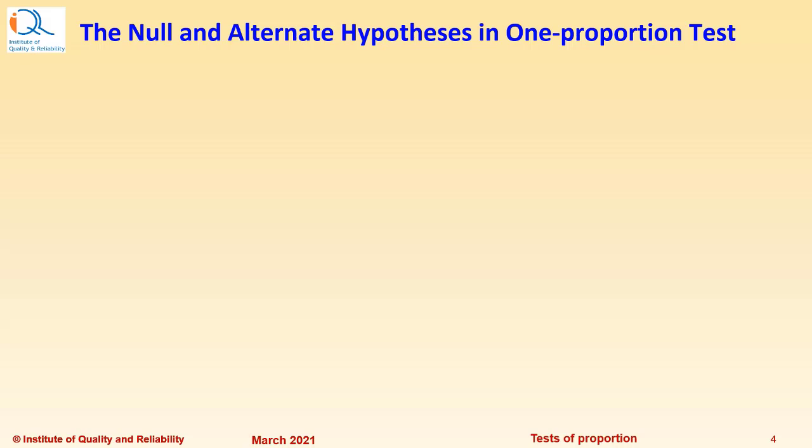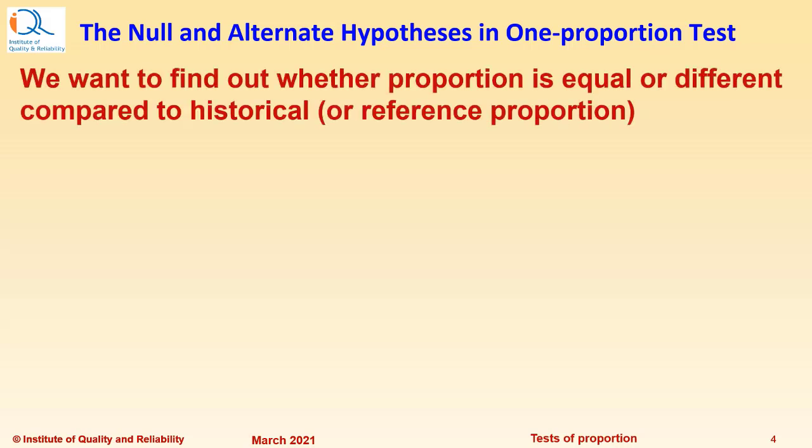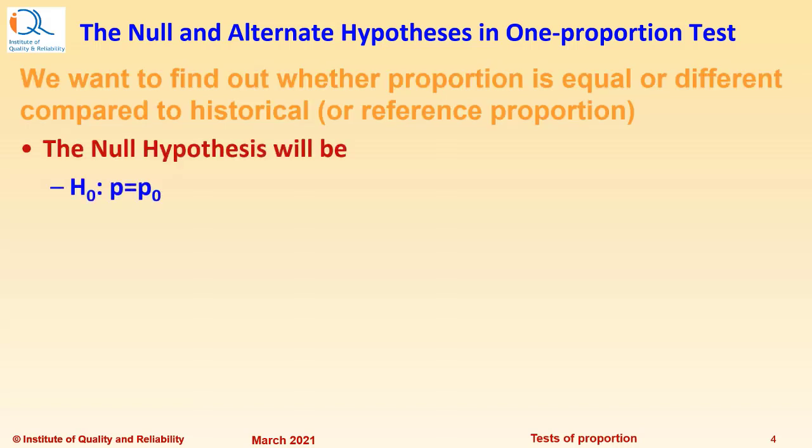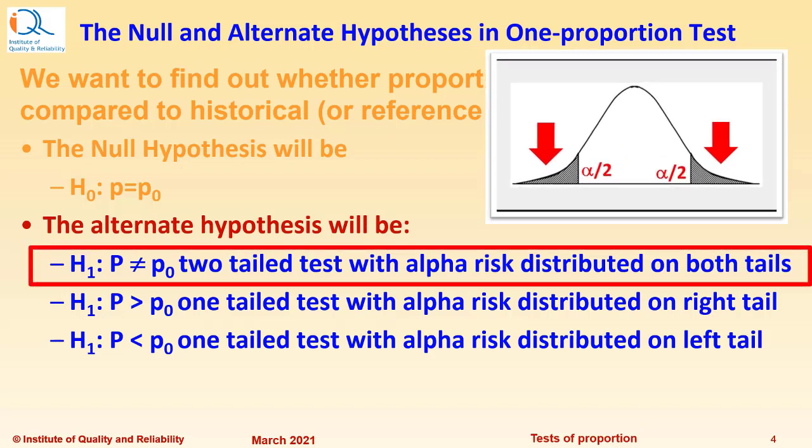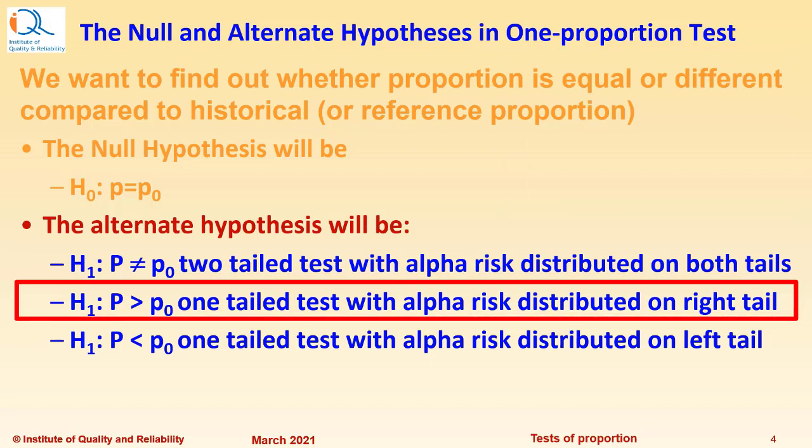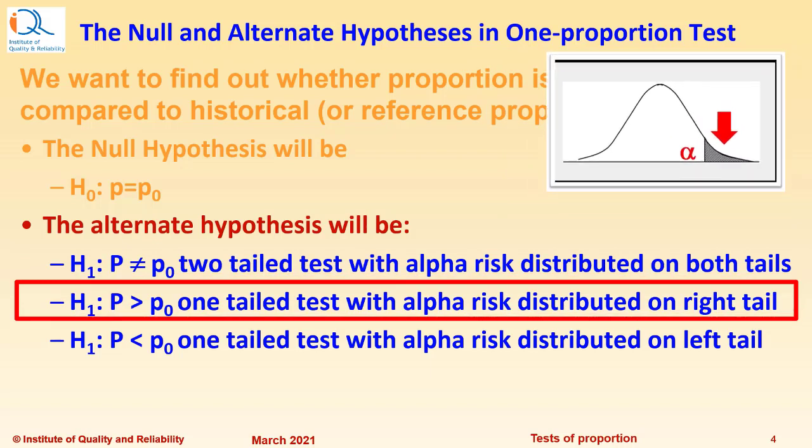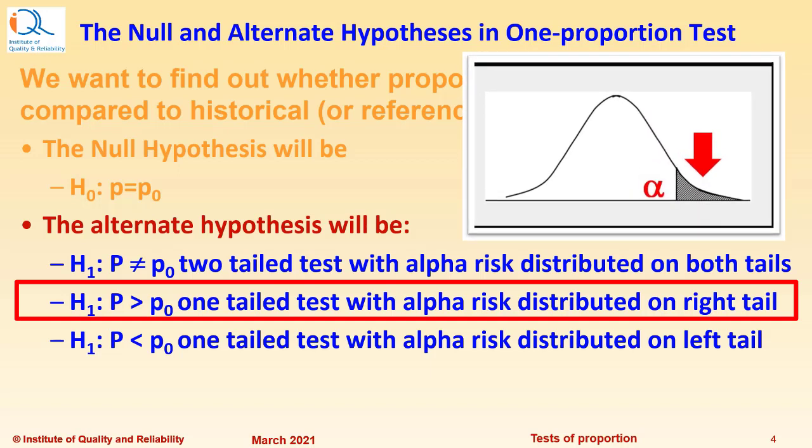Let us see the Null and Alternate Hypothesis in case of one Proportion Test. We want to find out whether proportion is equal or different compared to historical or reference proportion. The Null Hypothesis will be H0: P equals P0, where P0 is the reference or historical proportion. The Alternate Hypothesis can take the form H1: P not equal to P0, which can be a two-tailed test with alpha risk distributed on both tails, or H1 can be P greater than P0, which will be a one-tailed test with alpha risk distributed on right tail.